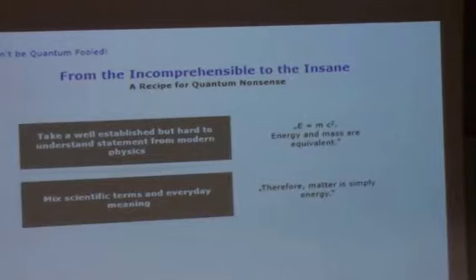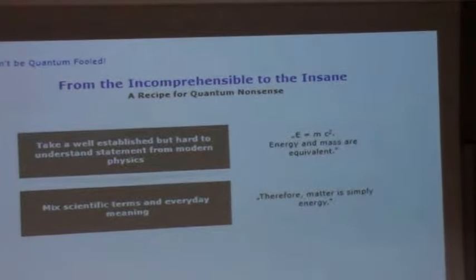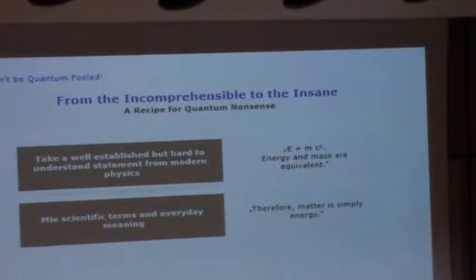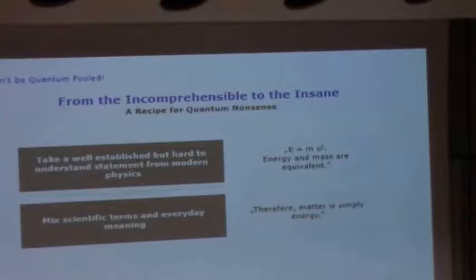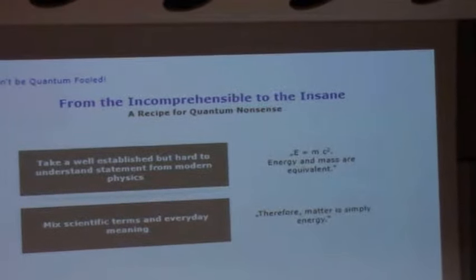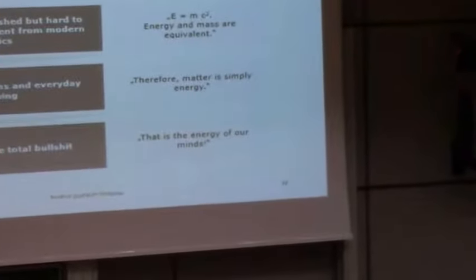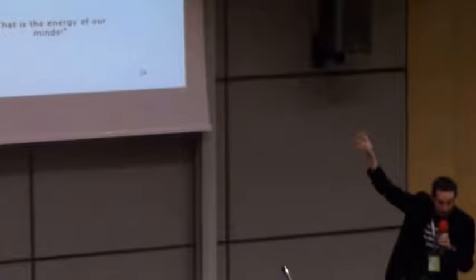And the physicists would say, okay, this is fine, this is okay, this is acceptable. And what you do next is you start to take the scientific terms out of there, in this case the mass equivalent, and replace them with kind of the everyday meaning of your everyday meaning of the same word. So, you end up with something like, therefore, matter is simply energy. And at this point, the physicist says, well, I know what you are trying to say, but you really shouldn't say it that way. But if you have an audience that's accepted this, then you can just move on and freely associate any kind of arbitrary bullshit that you want, and move on to that is the energy of our minds. And this is actually an example that I found in exactly this way in the book on hypnosis.